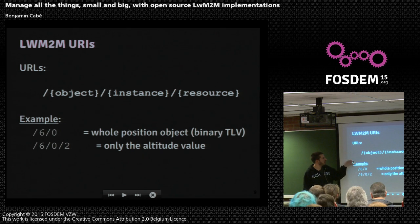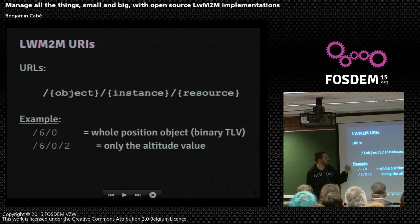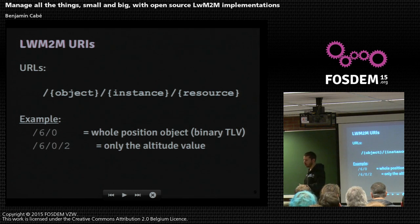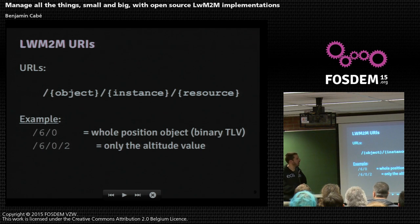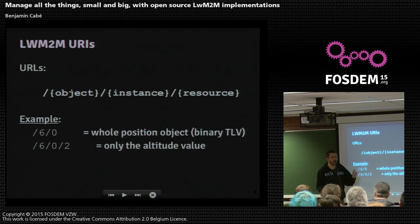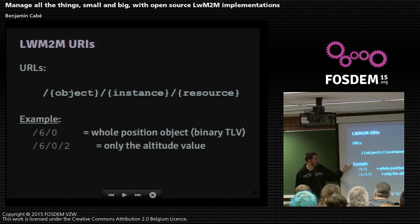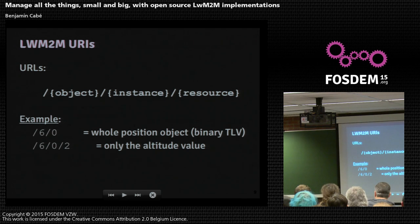For example, location is object number six. There is likely only one instance of location on your device. So slash six, slash zero, slash one would be attribute number one for your location, and attribute number two would be the altitude. Lightweight M2M allows you to query a specific resource, or get and update a complete object at once by issuing a request on the instance. In that case, you can retrieve a TLV-encoded value, or since it leverages CoAP, it could also be JSON.